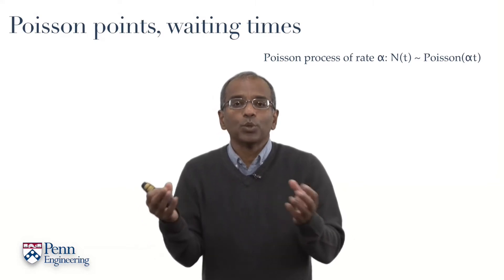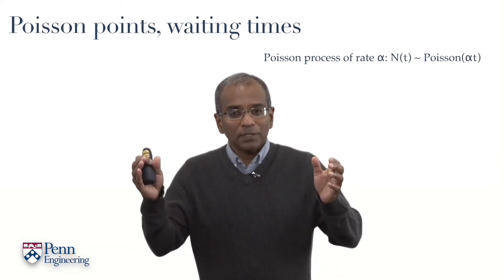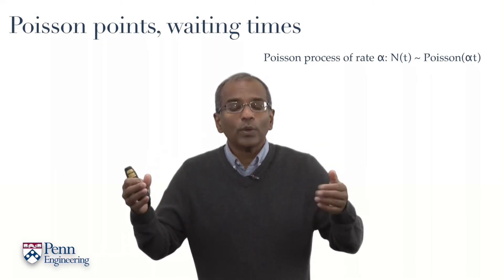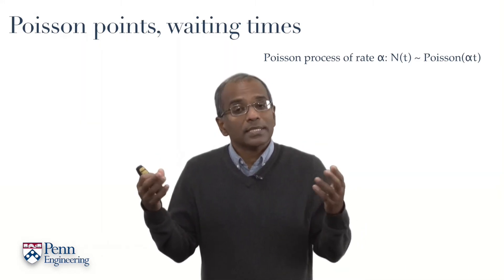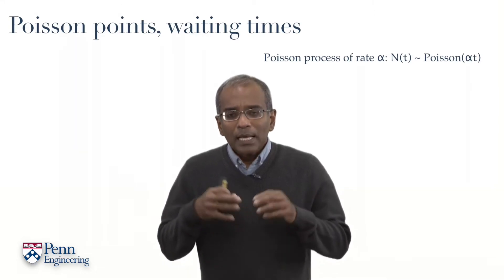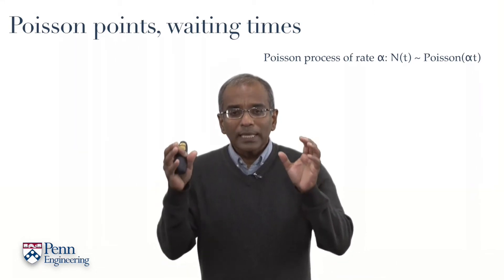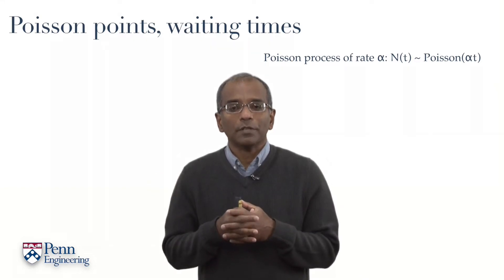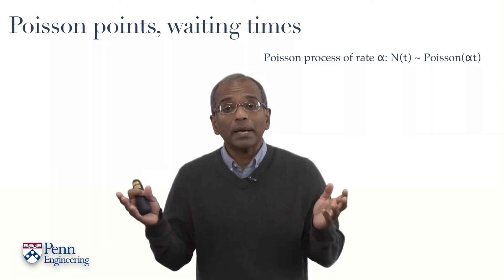At its heart, it is characterized by two requirements: that in any interval the number of arrivals is characterized by a Poisson variable with a certain mean arrival rate, say alpha, and furthermore, that in disjoint regions the number of arrivals constitute independent trials.